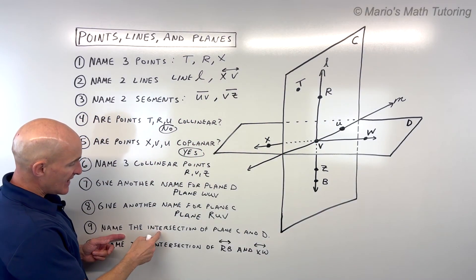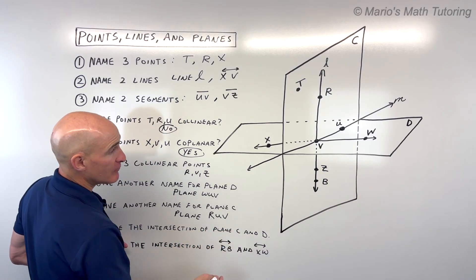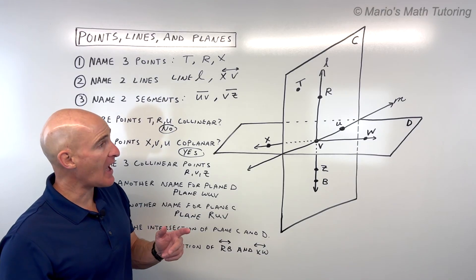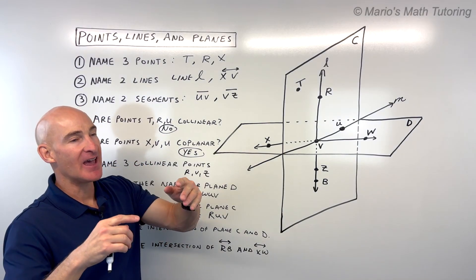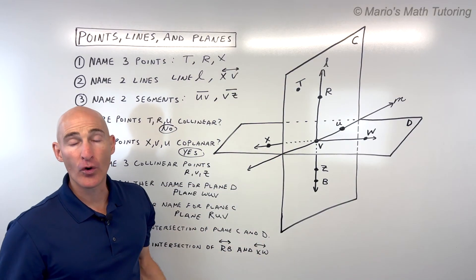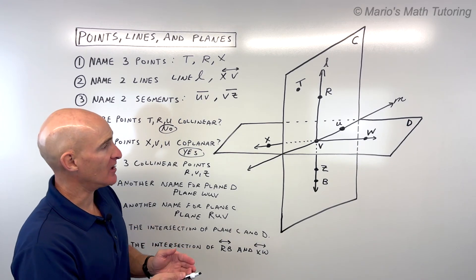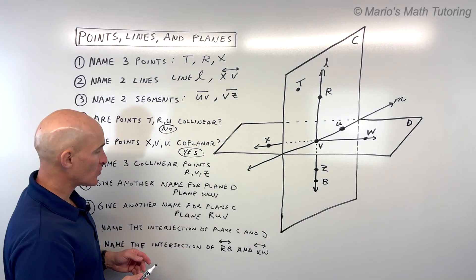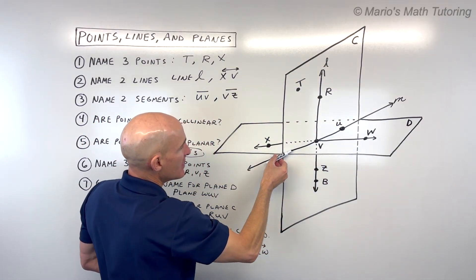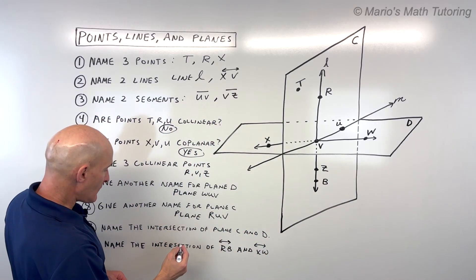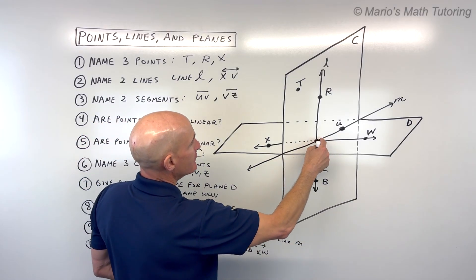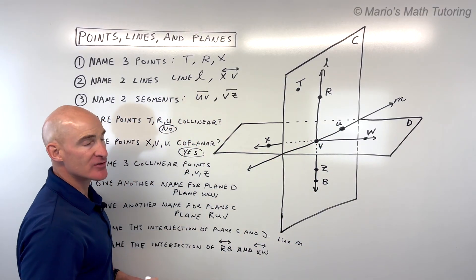Number nine says name the intersection of plane C and plane D. When we talk about intersection, it's where they cross. With lines, they cross at a point. Planes, like flat surfaces, they cross at a line. Kind of like if you look at the wall and the floor, you'll see a line where they join. In this case, where do these two planes cross? It's going to be at this line right here. I'm going to call it line M, or you could say line VU.